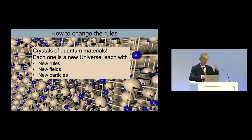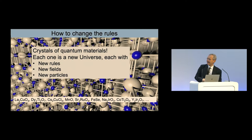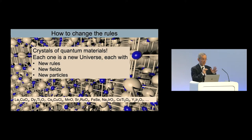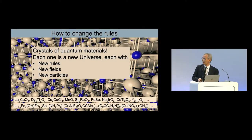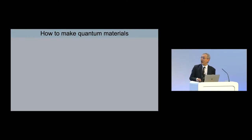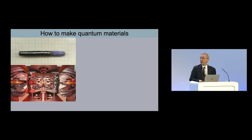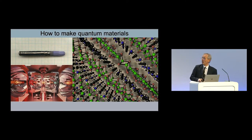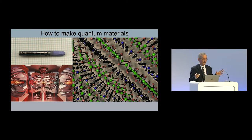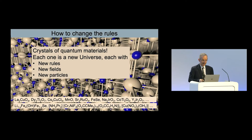How do you make these crystals of exotic matter? Some you can dig out of the ground; some are quite common compounds; some look chemically complicated. We can make crystals using a light furnace — this is our light furnace in Oxford. On a microscopic scale, you can see beautiful atomic structures that look quite complicated, but they give you rather beautiful properties. Each one a new universe.